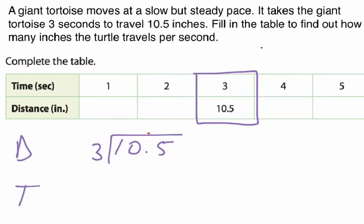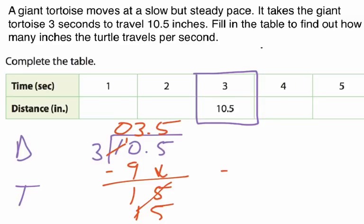10.5 divided by three. I'll bring this decimal up. Three does not go into one. It goes into ten three times. Three times three is nine. When you subtract and bring this over, you get one. Bring down the five, it's fifteen. Three goes into fifteen five times, and it's even. Three times five is fifteen. The unit rate is going to be, for every one second, this turtle is going to go three point five inches.